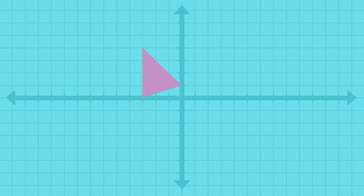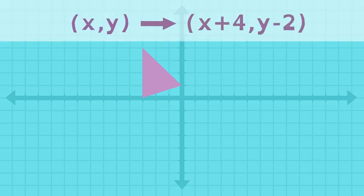Then, to show where the shape is moving, we can use a mapping notation, like this, to show the translation.